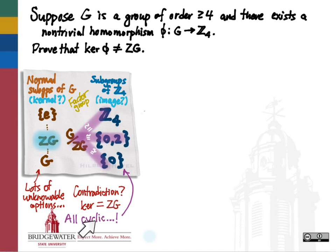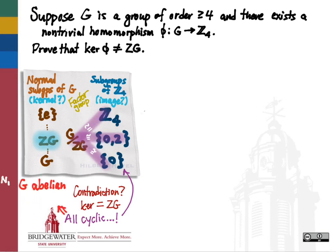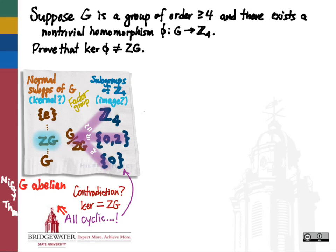Since Z₄ is a cyclic group, all of its subgroups are cyclic groups as well. So we are forced to conclude by the first isomorphism theorem that g mod the center of g must be cyclic. And therefore, by the nifty center theorem, if g mod Z(g) is a cyclic group, that means g must be an abelian group.